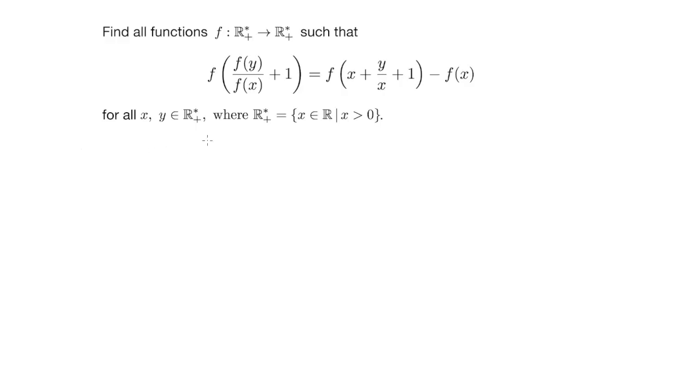So let's look at our equation. Since we have this f(y) over f(x) term, a very natural thing is to try y equals to x. And this implies that f(2) equals to f(x+2) minus f(x). And this is true for any positive real numbers x.